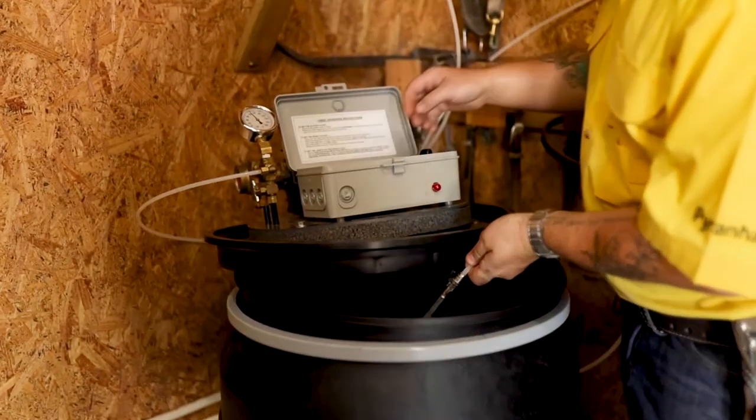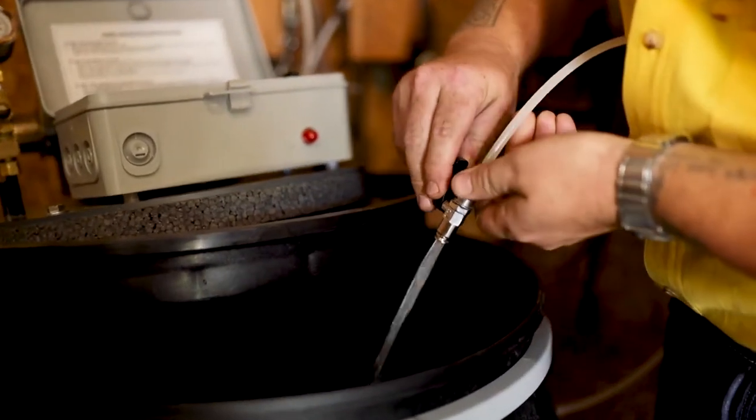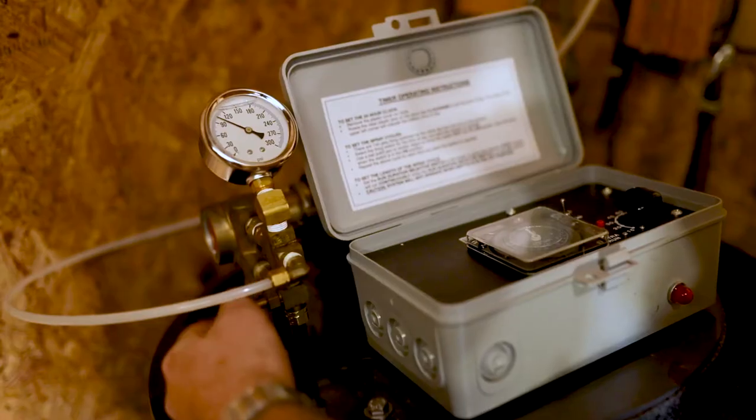At the end of the line, open the bleed valve until it pours a steady stream of liquid. Once the steady stream is present, close the bleed valve.